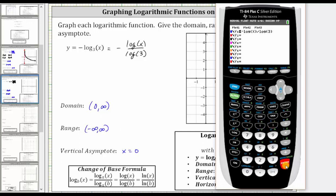And now to make sure we have the standard window, let's press zoom six. Zoom six gives us z standard or the standard window.